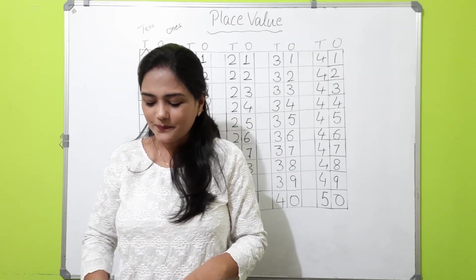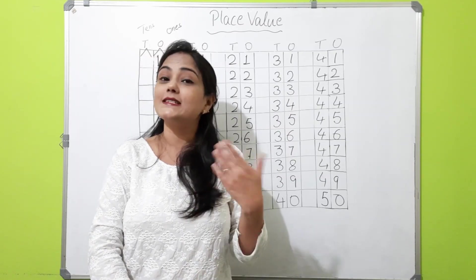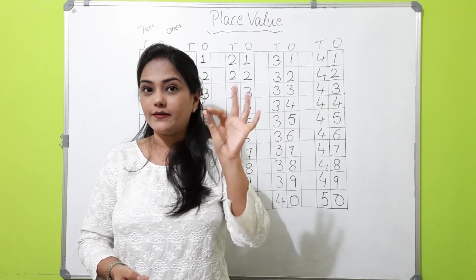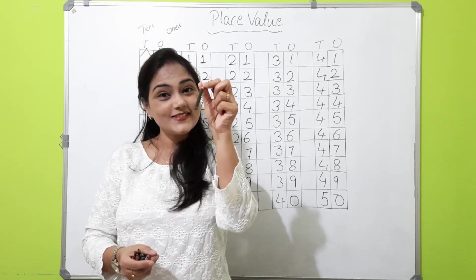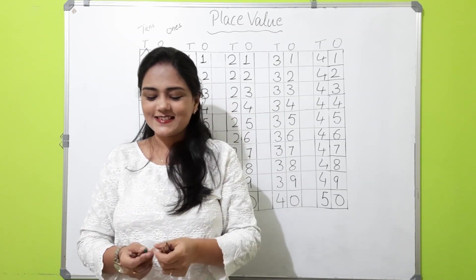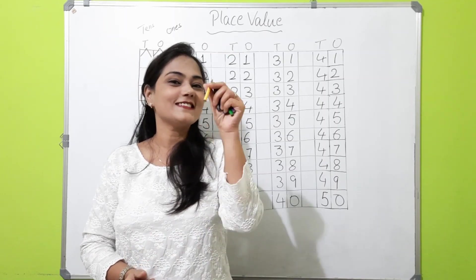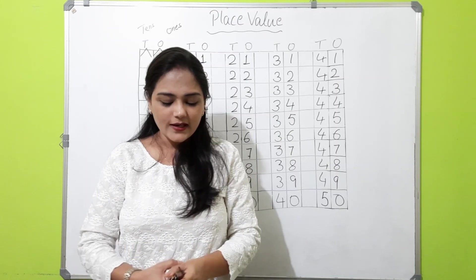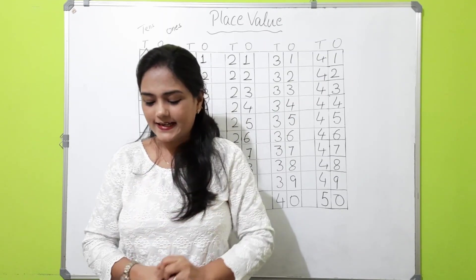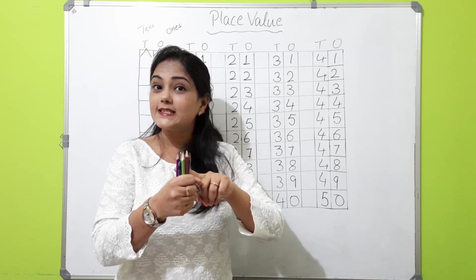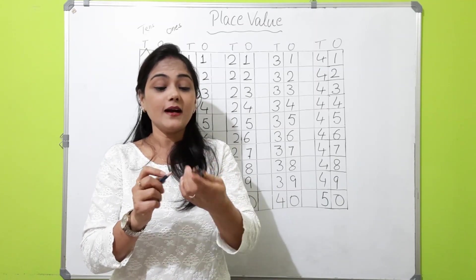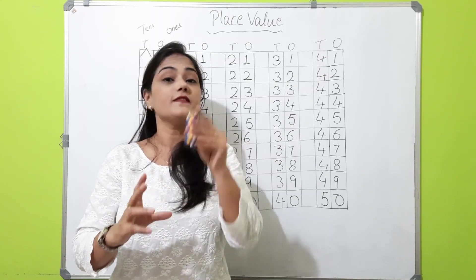I have some color pencils with me, and you can take anything — spoons, ear buds, clips, whatever you have. Now let's count them: 1, 2, 3, 4, 5, 6, 7, 8, 9, and 10. So these are our 10 color pencils. It is 10, so what are we going to do? We will make a bundle of these 10 color pencils — I will put a rubber. So this is our one bundle of 10 pencils.